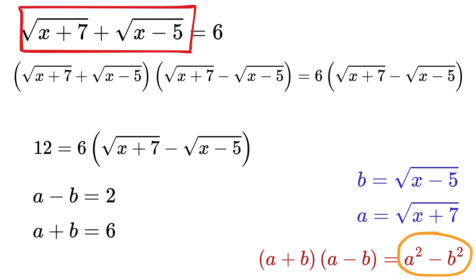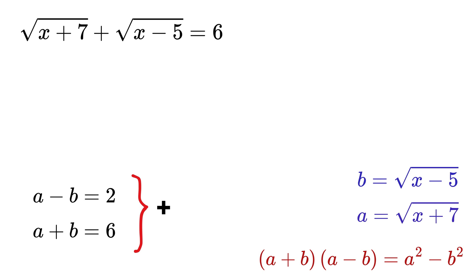Just add both these equations to cancel out b and get 2a equals 6 + 2 or 8. So a equals 4.